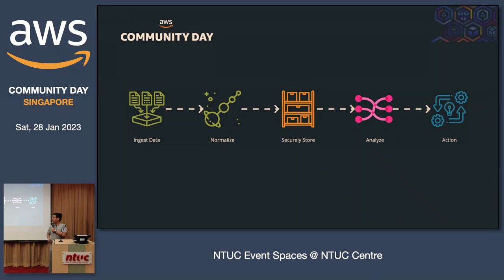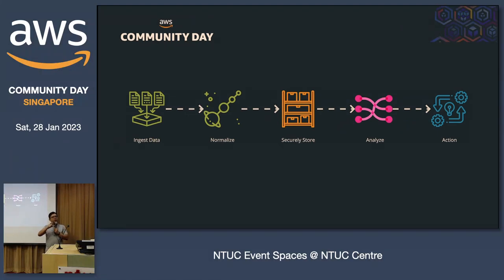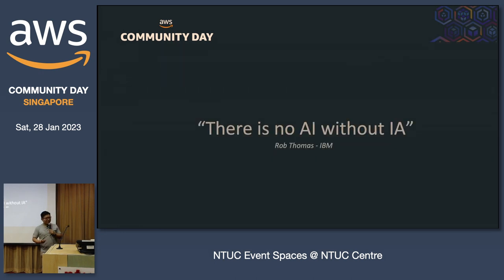The flow is: number one, ingest your data; number two, normalize so everything looks the same; number three, put it in proper storage; number four, analyze it; number five, take action. That's five steps, probably five different technologies. And most of the customer requests we get are: 'Do you integrate with this tool? Can you send logs to that tool? Can your log be tweaked to work for this tool?'